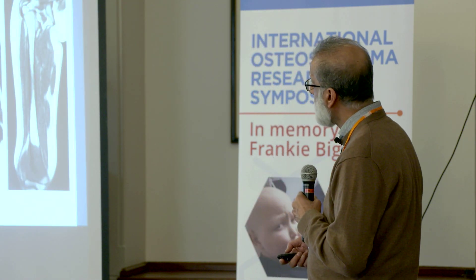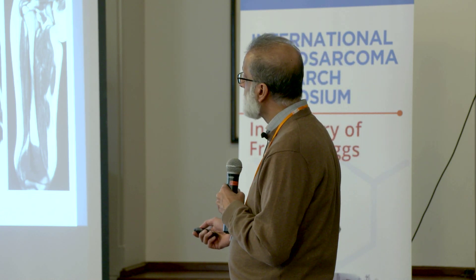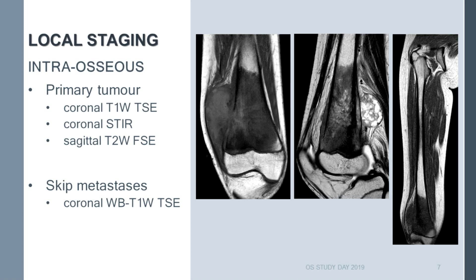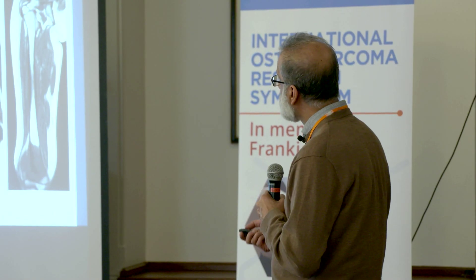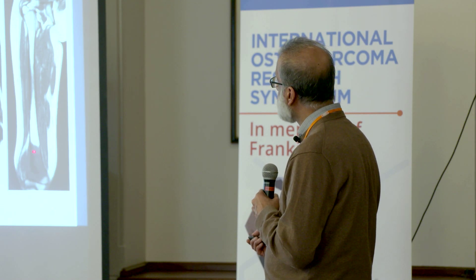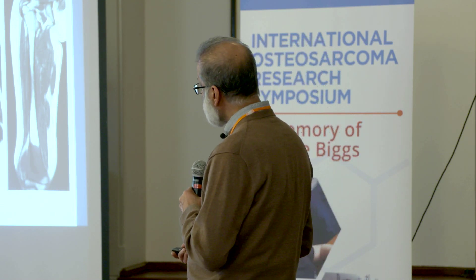Local staging uses a simple coronal T1-weighted spin echo sequence in a longitudinal plane, which has very good correlation with the macroscopic extent on pathological resection specimens — known for well over 20 years. We also do a T2 sagittal sequence, which is helpful for identifying areas of necrosis to avoid at the time of biopsy. We must also have a coronal T1-weighted whole bone MRI — as a minimum a T1-weighted sequence — to exclude a skip metastasis.